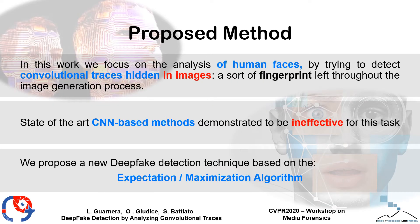In this work, we focus on the analysis of images representing human faces, trying to detect convolutional traces hidden in those images — a sort of fingerprint left during the generation process. State-of-the-art methods based on CNN demonstrated to be ineffective for this task.